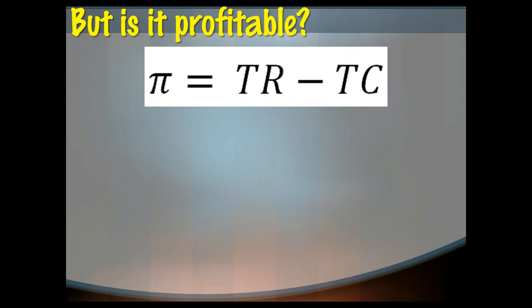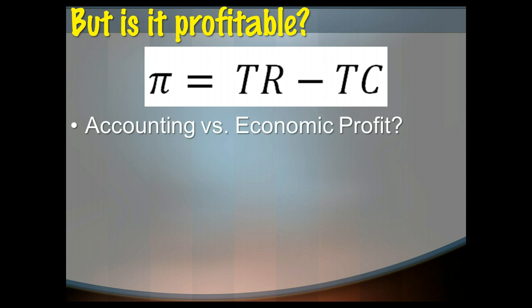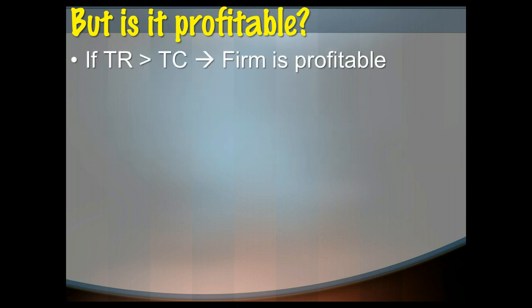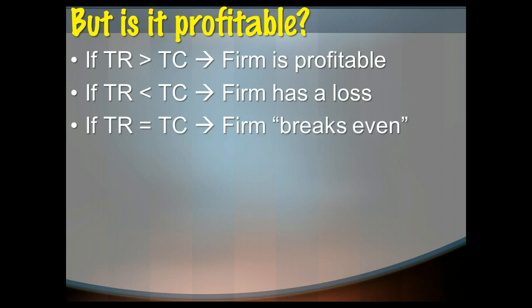So we would look at an equation like this where we'd say profit, which is designated by the Greek letter pi, profit is equal to my total revenue, how much money is coming in, so the quantity I sold times the price, minus my total cost of production. And if I find that my total revenue is greater than total cost, then I would say the firm is profitable. If total revenue is less than total cost, then I would say there is a loss. And if they are the same, then it's saying that the firm is breaking even.